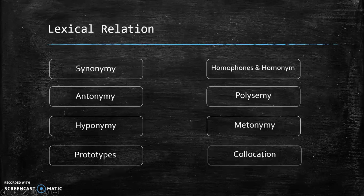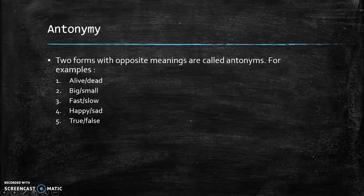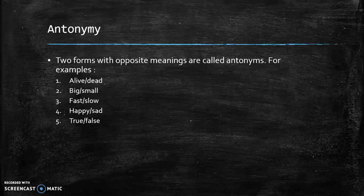The next subject is antonymy. Two forms with opposite meanings are called antonyms. For example: alive and dead, big and small, fast and slow, happy and sad, and true and false.